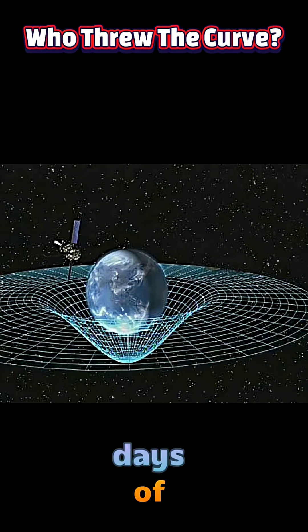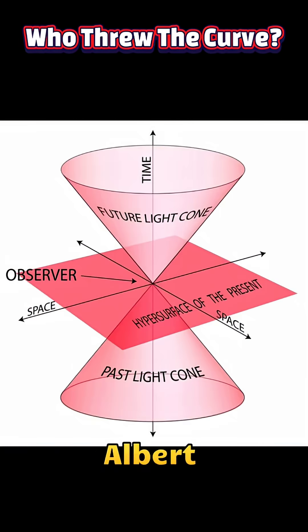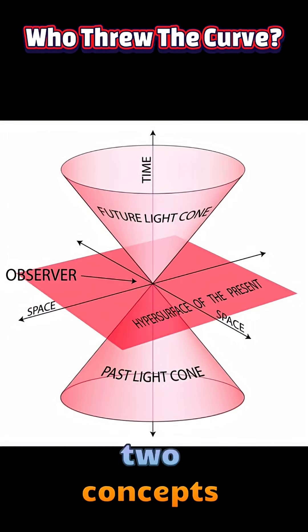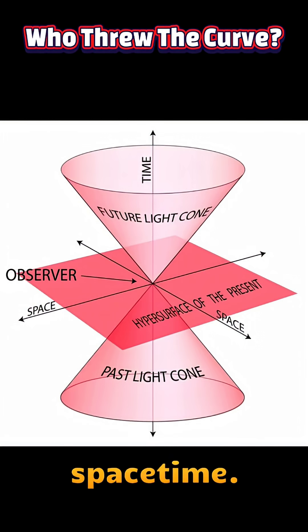This view held sway from the days of Isaac Newton, who saw time as absolute and universal, ticking at the same rate for everyone, everywhere. But in the early 20th century, Albert Einstein's theory of relativity, building on the work of mathematician Hermann Minkowski, fused these two concepts into a single four-dimensional continuum known as space-time.